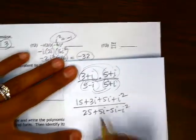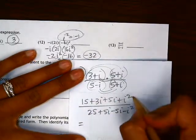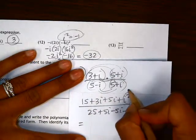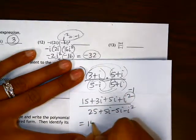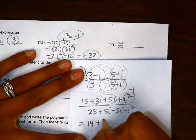So in the numerator, if we combine like terms, let's first make sure we realize here that this is equal to negative 1. So 15 minus 1 is 14. These combine to 8i.